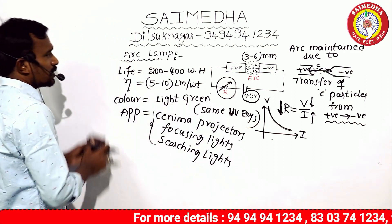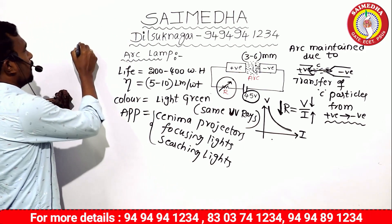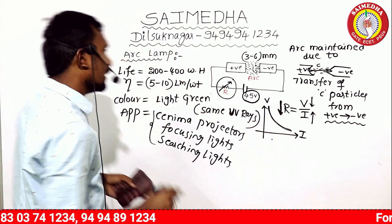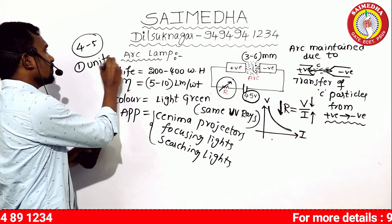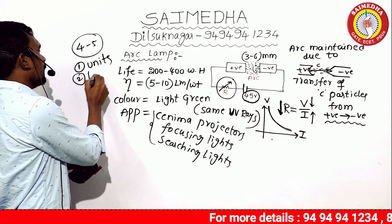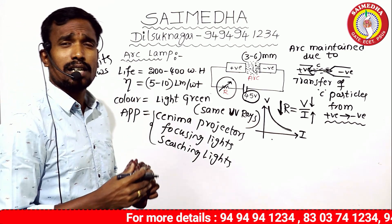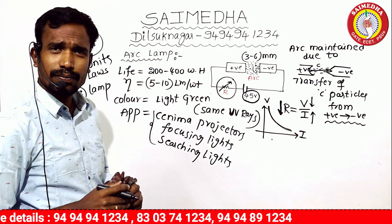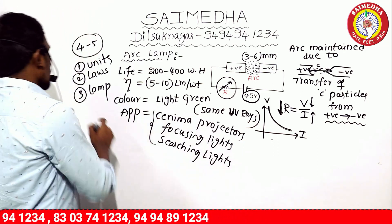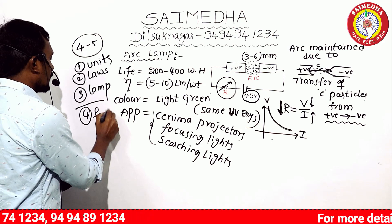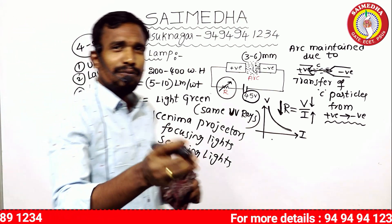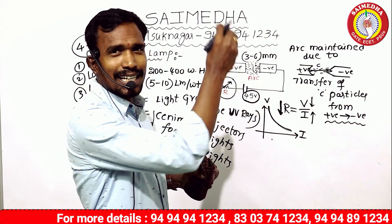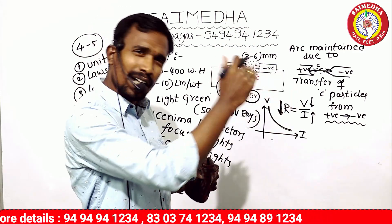In the illumination topic, for example, 4 to 5 questions will come. If 5 questions come, one question will be on units, two on laws, last question is problem — if you can't solve it, still there's a chance. Three questions will be on lamps. Now, 4 factors are made. In one SPDCL exam, directly the utilization factor is the first factor — that's the answer.